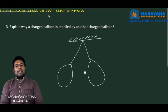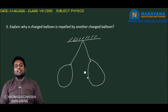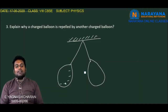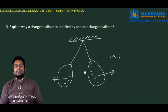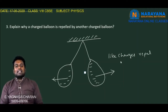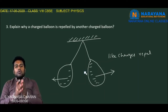Let us see the third question: Explain why a charged balloon is repelled by another charged balloon. Considering two balloons that are both charged, the same kind of charge exists on both balloons. Because of similar charges — like charges repel — the two balloons move away from each other. The principle is: like charges repel whereas unlike charges attract. As the same kind of charge is present on both balloons, they move away from each other.